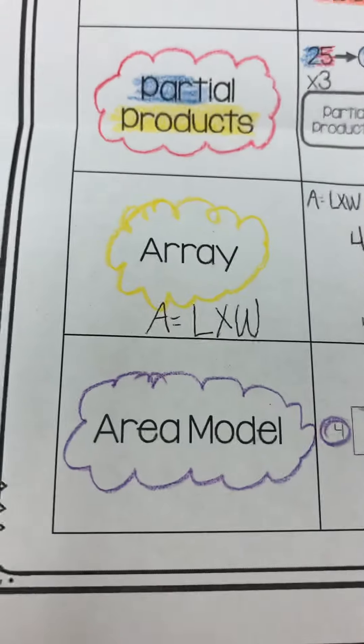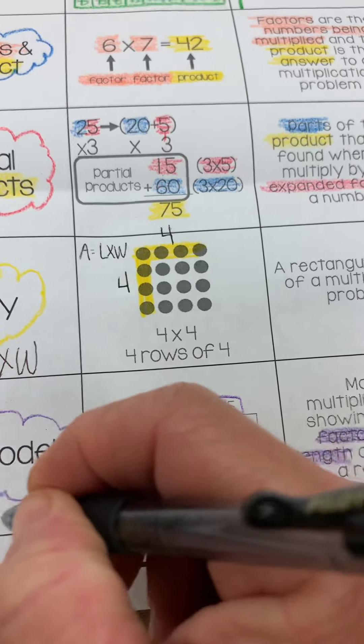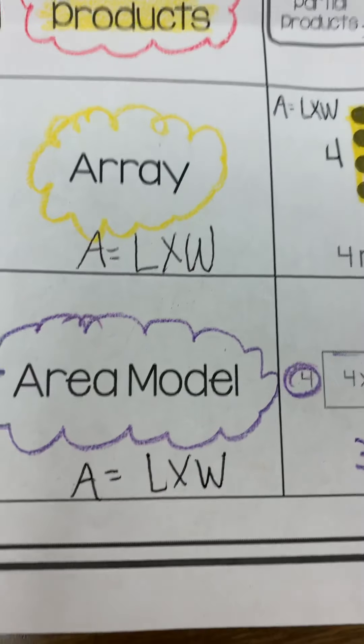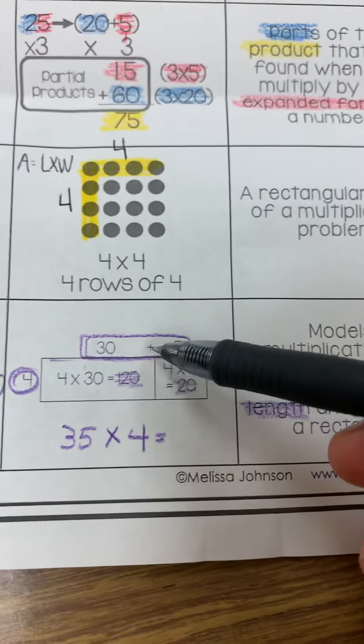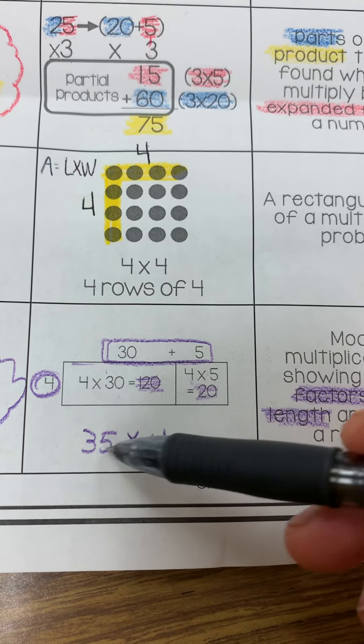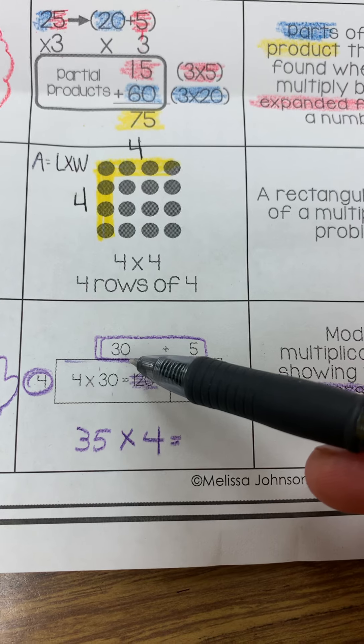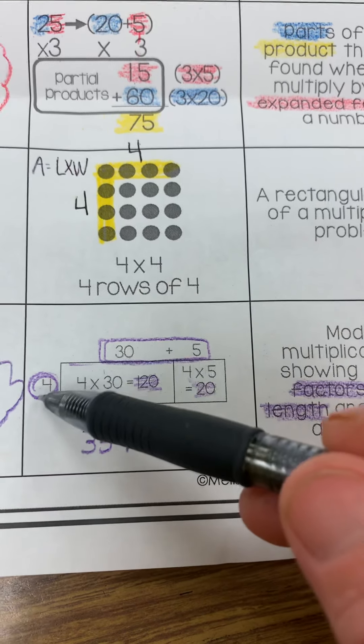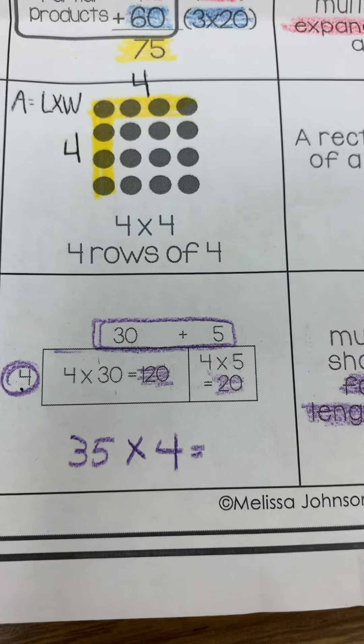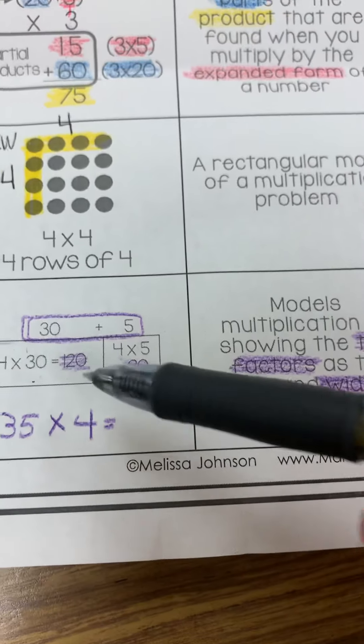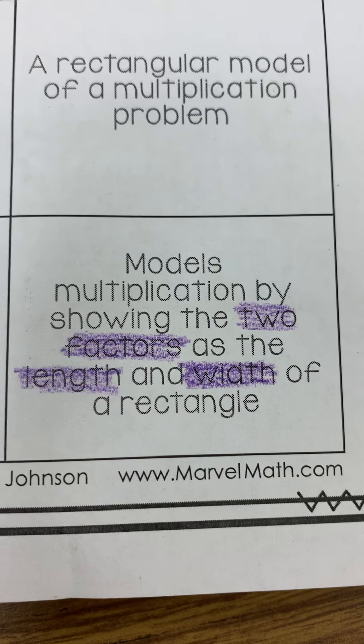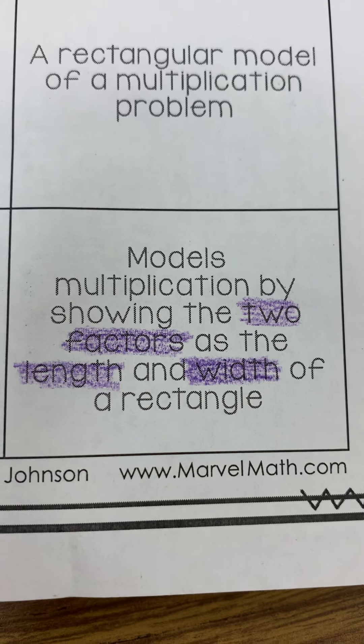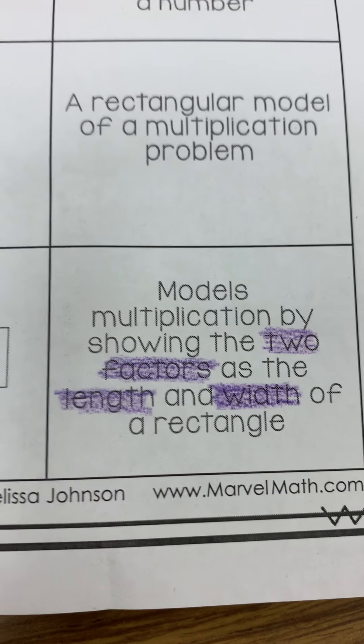And then the last one is area model. An area equals length times width. Area model means you're breaking a number. We take 35 times 4. You're breaking 35 into 30 plus 5 and multiplying it by 4. And that is area model. You get each area, and then you add them together. So area model models multiplication by showing the two factors as the length and the width of the rectangle.